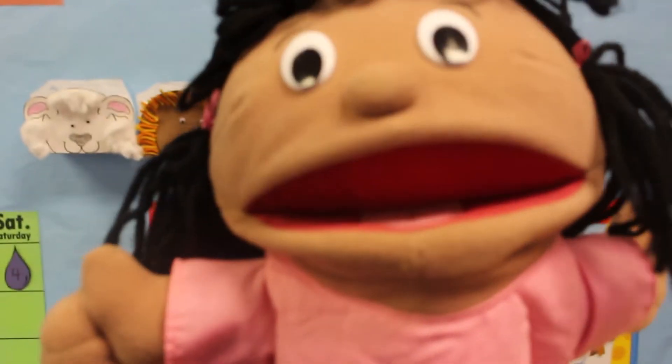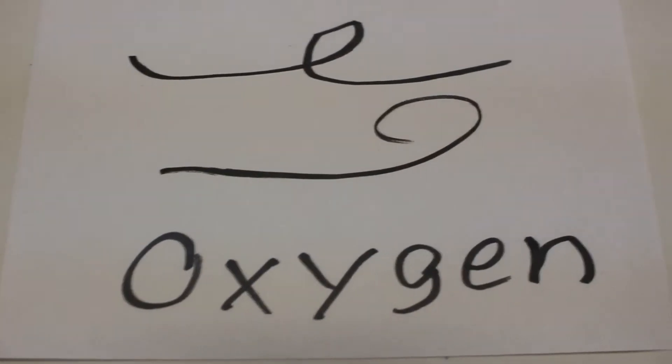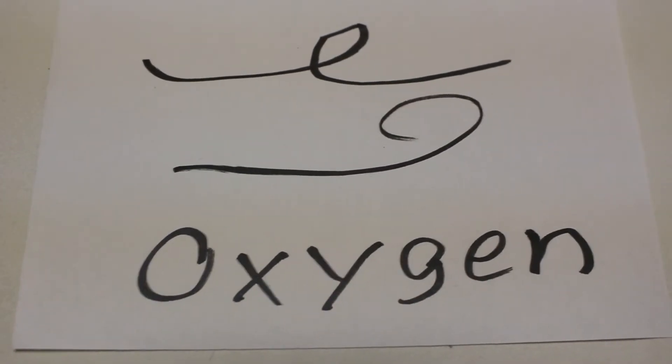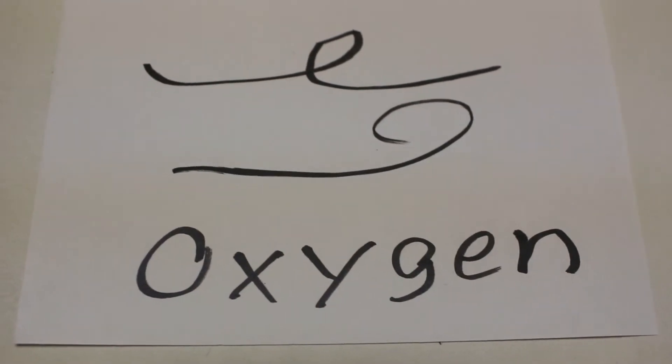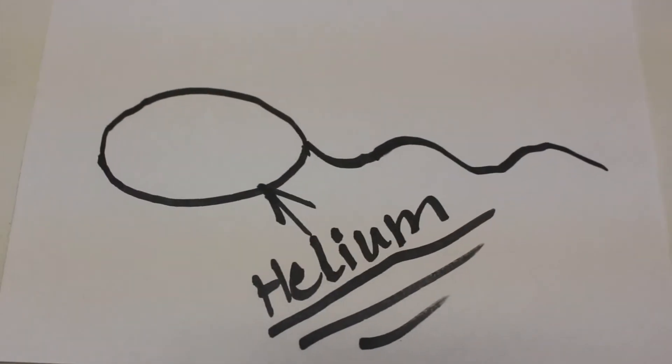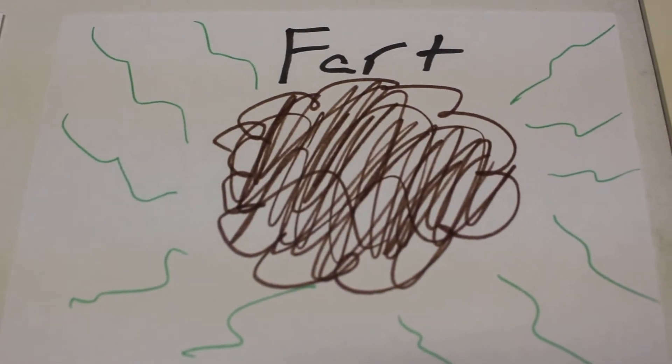Gas takes up the place of an area. These are three examples of gas. Number one, oxygen. Number two, helium. And number three, what comes out of my butt sometimes — fart.